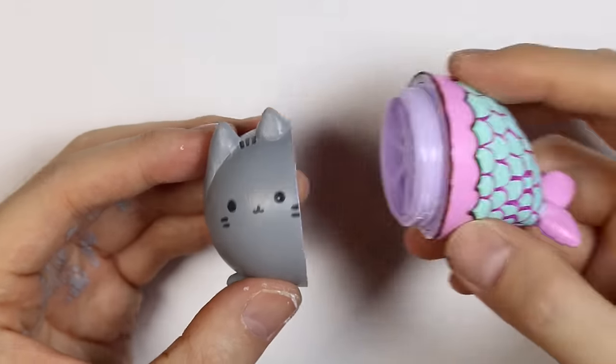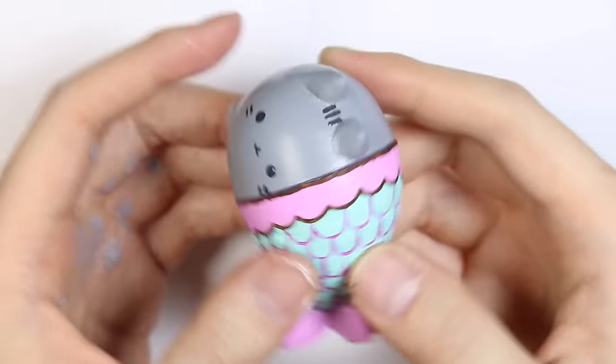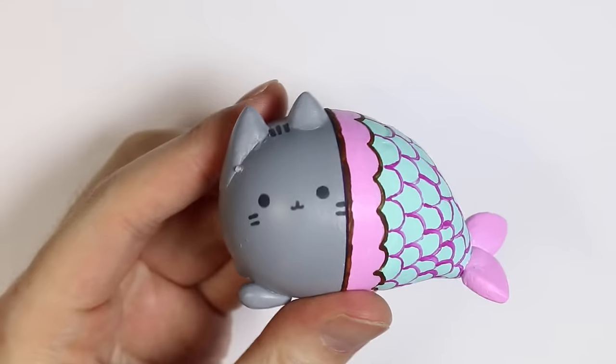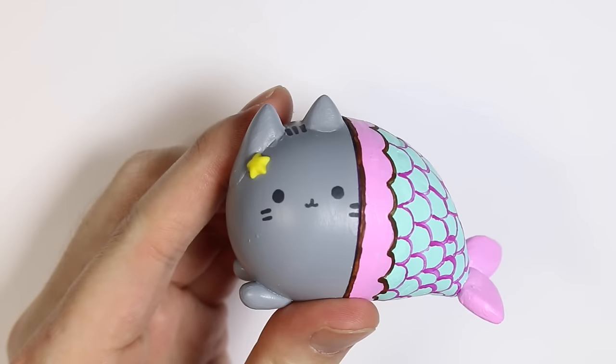This is how it looks like with the paint all dried. As you can see, it's super bright and vibrant. I'm gluing a little star in the corner of its ear just to give it that detail.